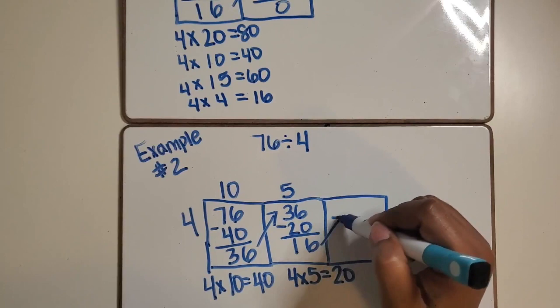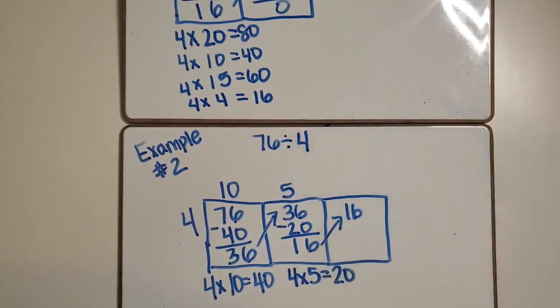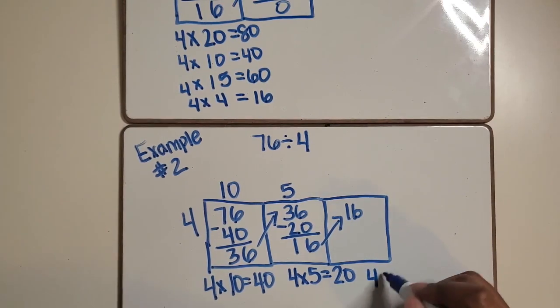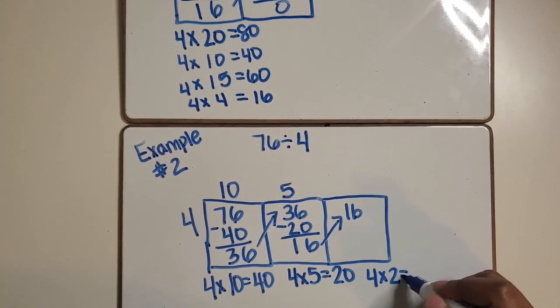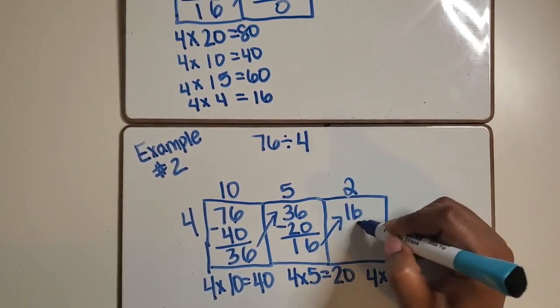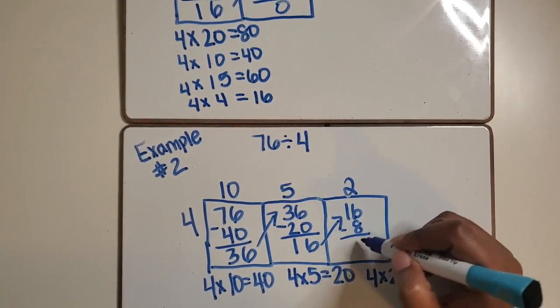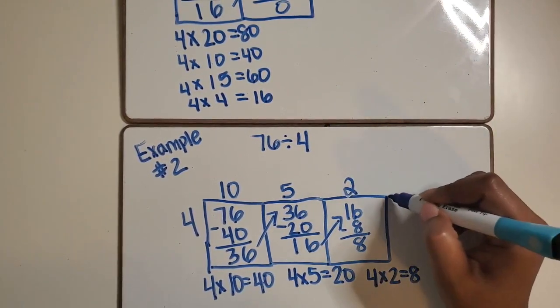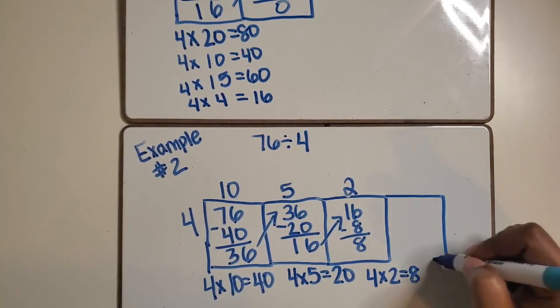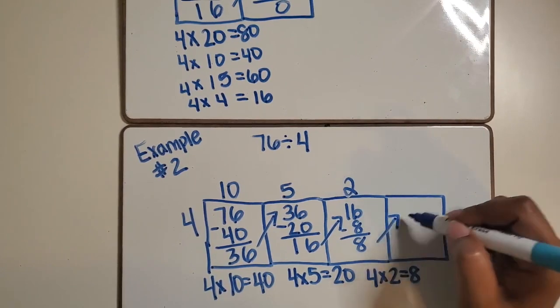We need to extend our rectangle again and begin with the 16 as the total. A student may feel more comfortable with 4 groups of 2 equaling 8 so we can use that. 4 times 2 equals 8. Subtract the 8 from the 16 will leave us with 8 remaining.